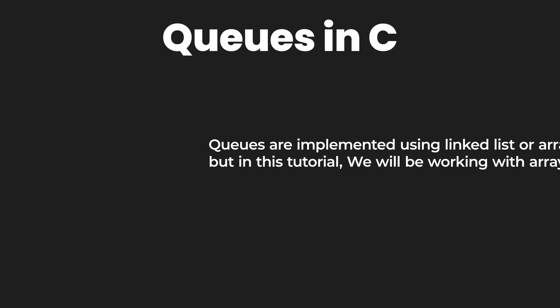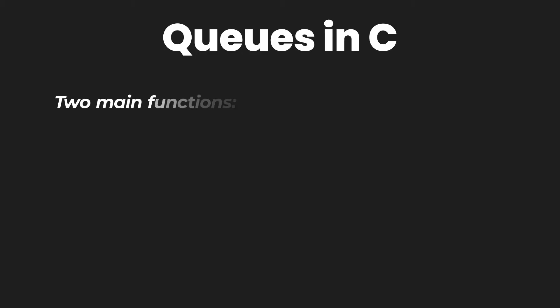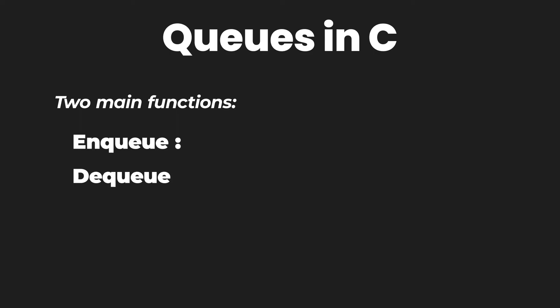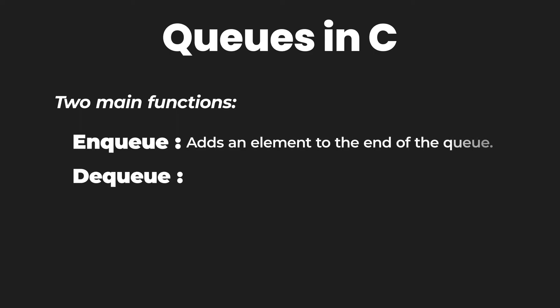Let's talk about the functions of queues. A queue has two main functions: the first one being the enqueue function and the other one being the dequeue function. An enqueue function adds an element to the end of the queue, while a dequeue function removes an element from the queue.